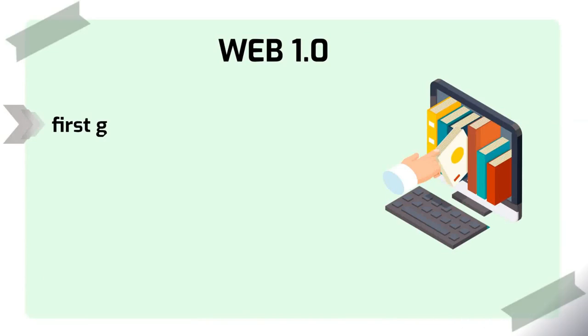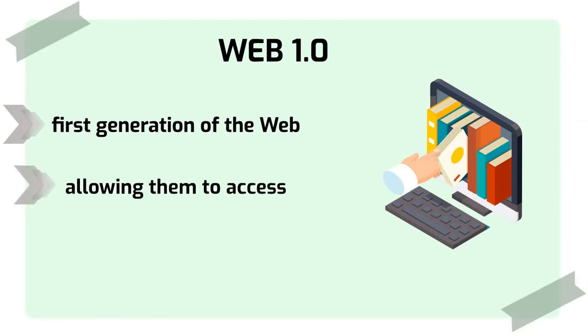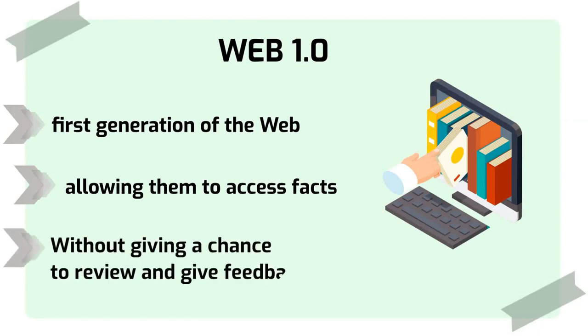Basically, this first generation of the web consisted of a few people creating web pages and content for a large group of readers, allowing them to access facts, information, and content from the sources. This read-only web limited the role of a user to read information provided by content producers without being given the chance to review and give feedback.